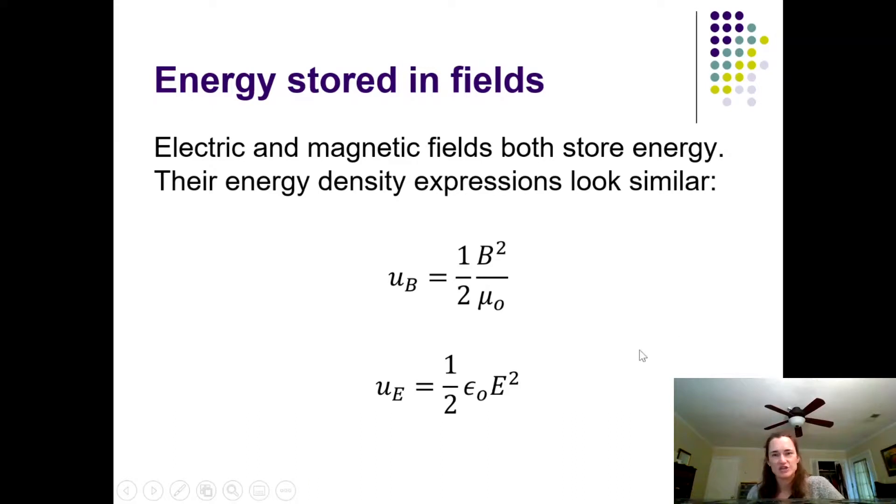This might remind you of an earlier expression that we arrived at for the energy density of an electric field. That one was u_E equals one-half epsilon naught E squared. You can see that the energy stored in electric or magnetic fields is proportional to the strength of those fields squared, in very similar looking expressions. Remember, mu naught is the permeability of free space, 4 pi times 10 to the minus 7 in SI units. Epsilon naught is the permittivity of free space, which is 8.854 times 10 to the minus 12 in SI units.